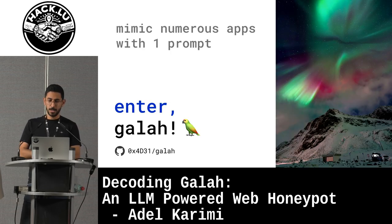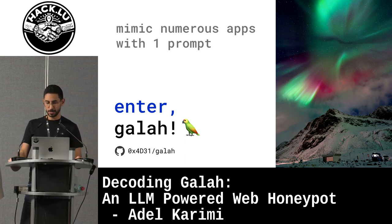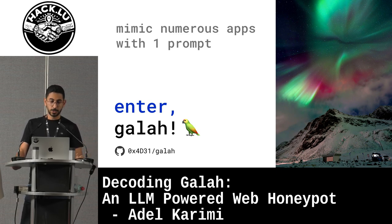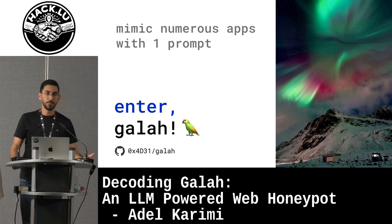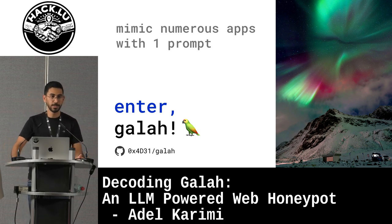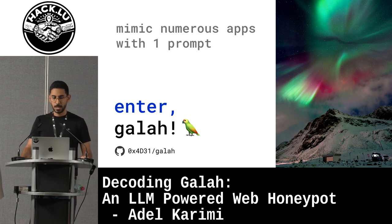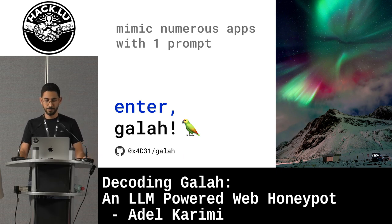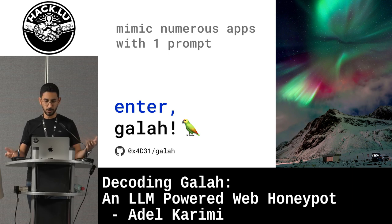With that, introducing Glow. It's named after an Australian parrot, which is both smart and dumb, which perfectly mirrors the behavior of this honeypot as well. The idea behind Glow was to see if we can mimic numerous applications — or a wide range of applications — with just one prompt, so we can generate responses on the fly without knowing about that application before.